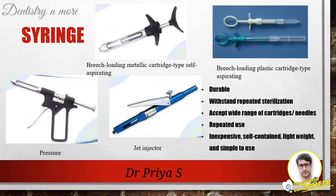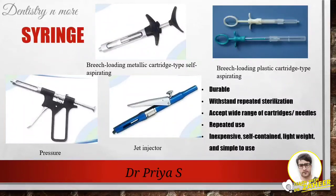The American Dental Association criteria for acceptance of local anesthetic syringes are: the syringes must be durable and able to withstand repeated sterilization without any damage. They should be capable of accepting a wide range of cartridges and needles, be suitable for repeated use, inexpensive, self-contained, lightweight, and simple to use with one hand. They should also provide effective aspiration, and blood in the cartridge should be easily observed.